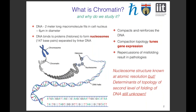So what is chromatin and why do we study it? If you were to stretch the DNA found in the nucleus of each of your cells, you would get a two-meter long fiber which has to fit in the approximately six-micrometer diameter of the cell nucleus. The DNA binds itself to proteins named histones to form nucleosomes — spools of 147 base pairs of DNA around eight histone proteins, separated by linker DNA. Chromatin compacts and reinforces the DNA, and the topology of compaction controls gene expression with repercussions in various pathologies.